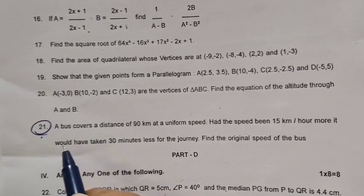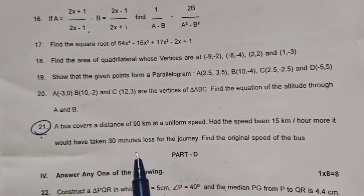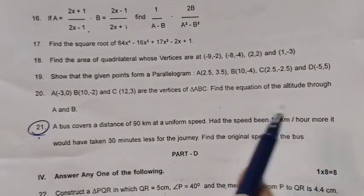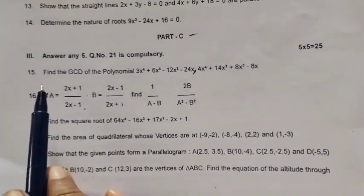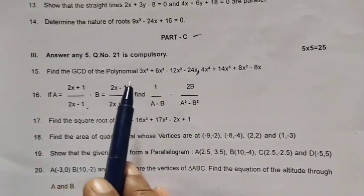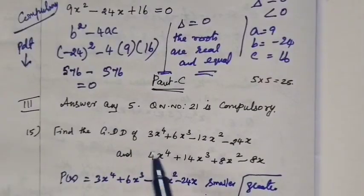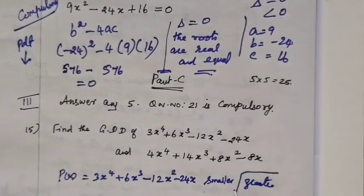If you want to see all the sums, particularly this type of sum should not be omitted. Now we see question number 15. Find the GCD. How do you find the GCD?